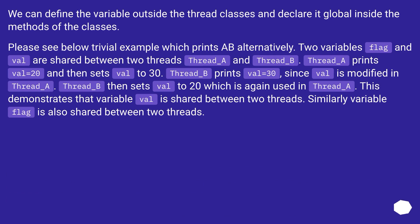We can define the variable outside the thread classes and declare it global inside the methods of the classes. Please see the trivial example below, which prints 'a' and 'b' alternatively. Two variables, flag and val, are shared between two threads: thread_a and thread_b.